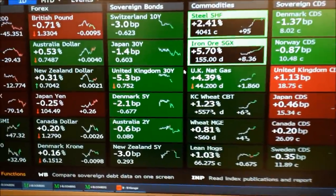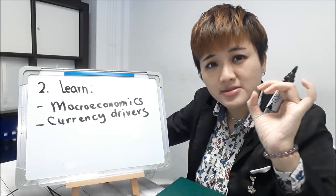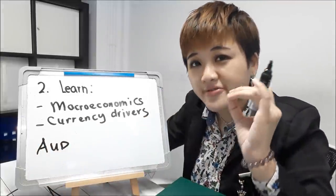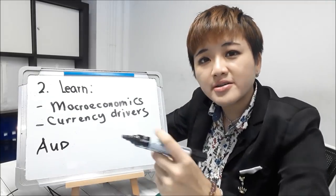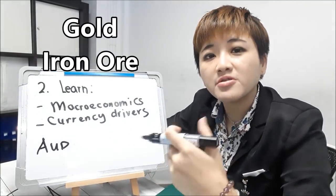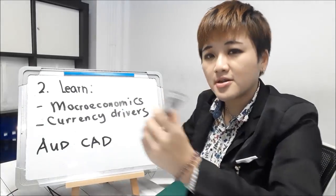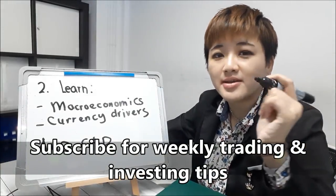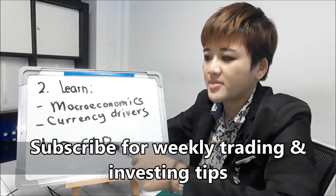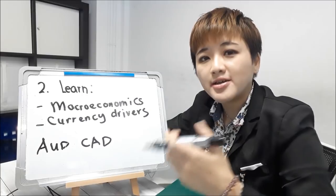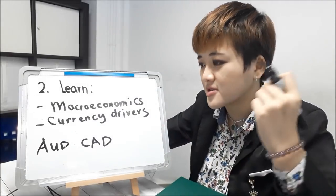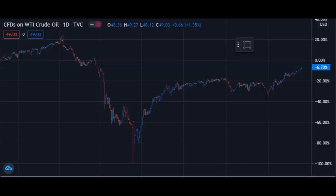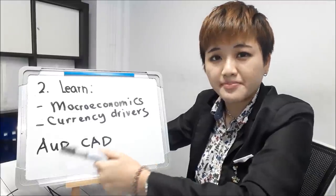Different currencies have different main drivers. They might all be driven by the same things, but there are certain factors that drive certain currencies. For example, a high-yield currency like the Aussie dollar — one of its drivers is gold prices and also iron ore prices. Another example, Canadian dollar: one of the major trading partners of Canada is the United States, and hence the US economy is going to tremendously affect Canada. Canadian dollar is also driven by oil prices.